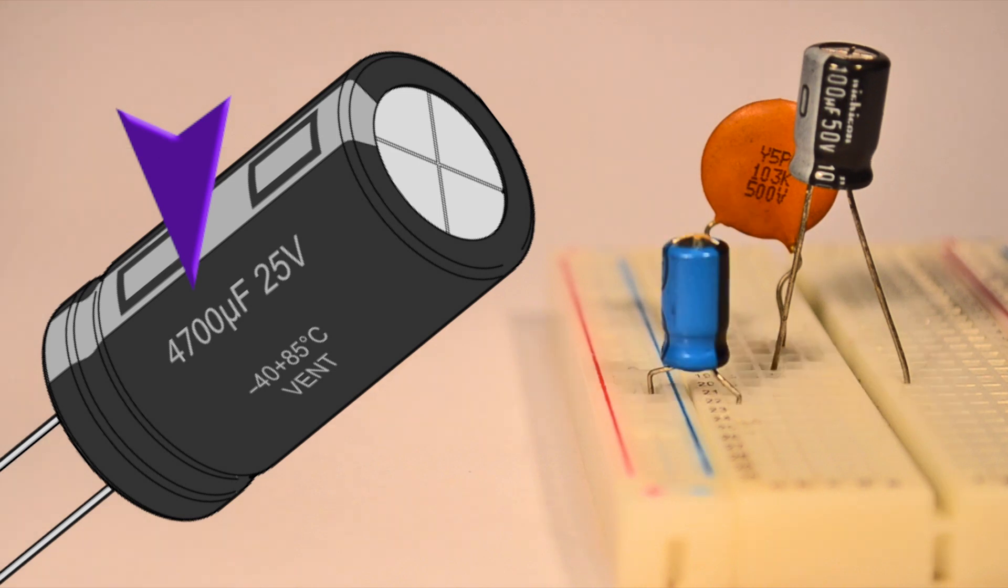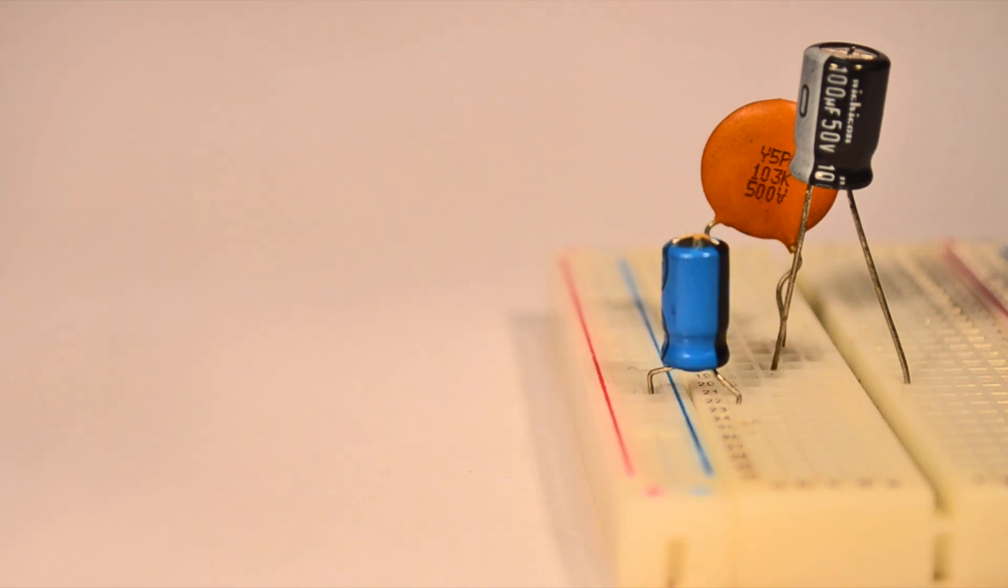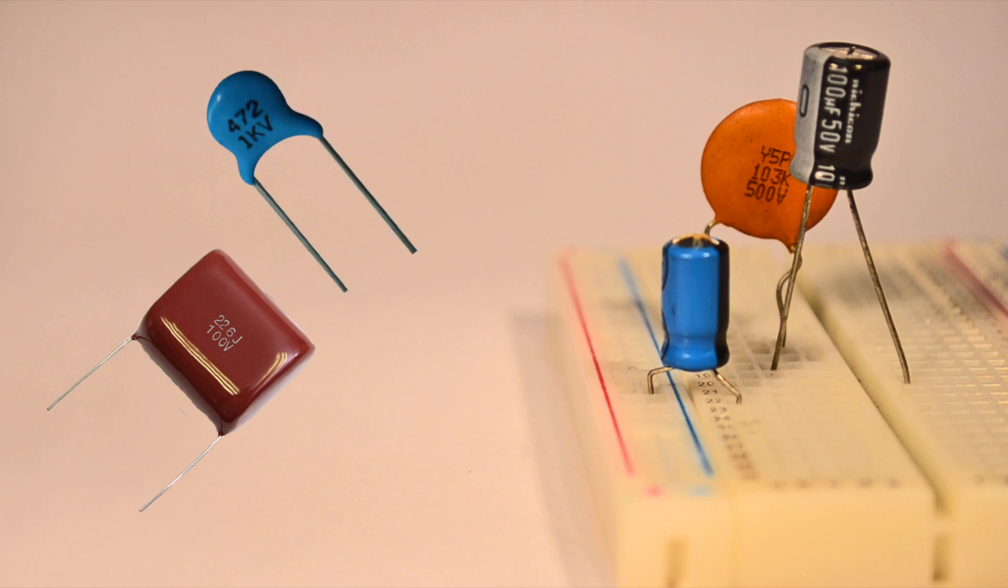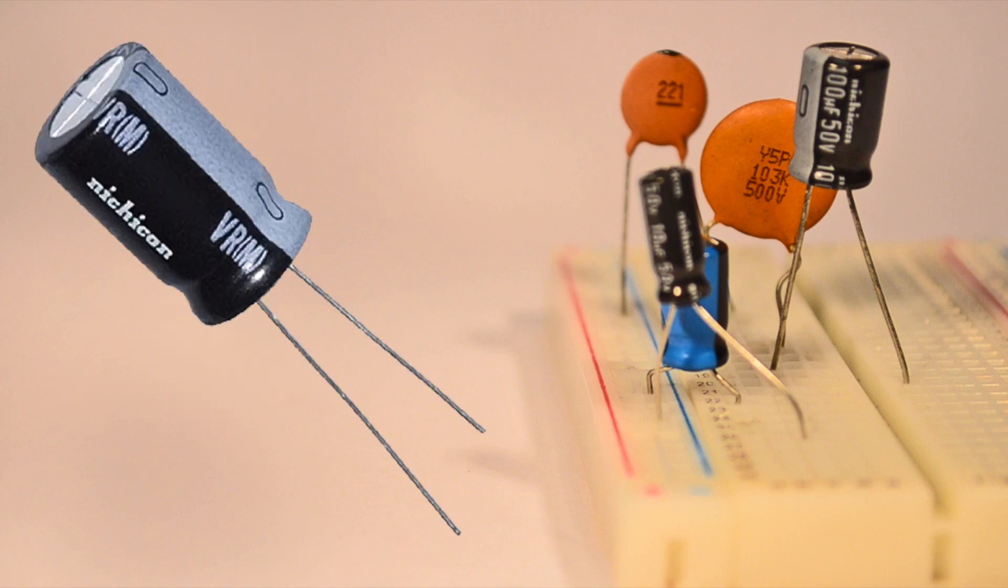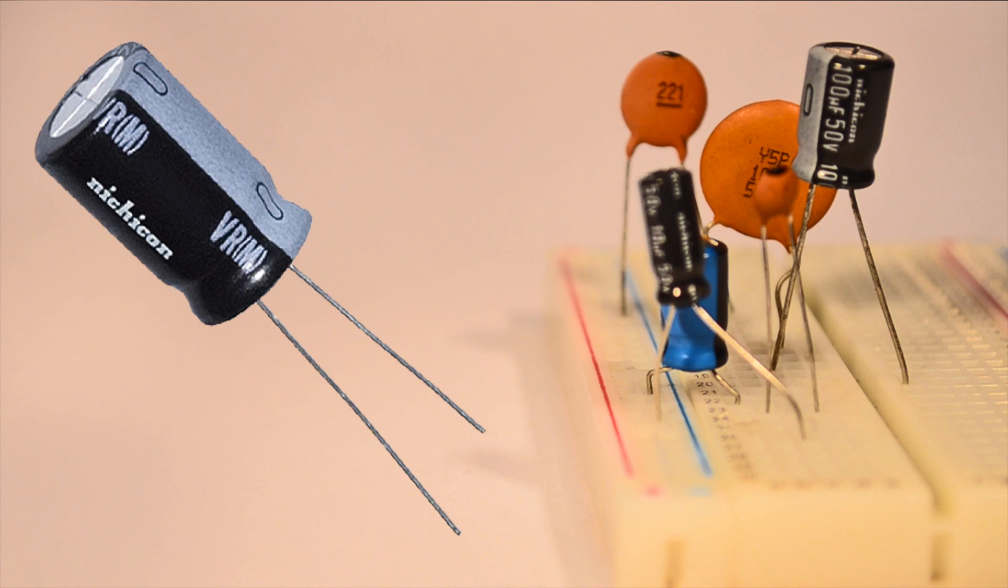Capacitors can come in a variety of forms, each possessing its own benefits. Ceramic and film capacitors are bi-directional and are widely used when small or precise values are necessary. Electrolytic capacitors are polar, meaning that they only function properly in one direction, and are capable of having higher values of capacitance.